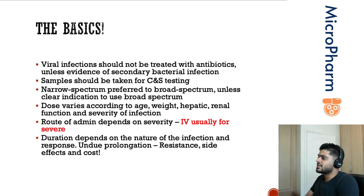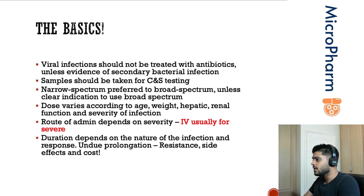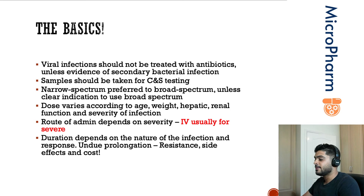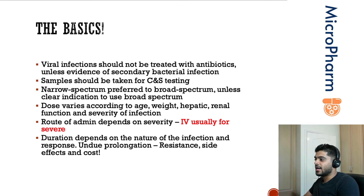The dose of antibiotics can vary according to the patient's age, weight, hepatic function, liver function, and kidney function. Some antibiotics are renally excreted, so if a patient has poor renal function, a lower dose may be needed. The severity of the infection also matters — flucloxacillin is a perfect example: severe cellulitis can require up to 2g four times a day intravenously, while milder cases may need as little as 500mg four times a day.